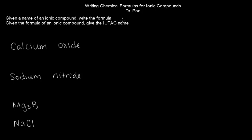Right now we're going to practice writing chemical formulas and naming ionic compounds. If you're given the name of an ionic compound, you should be able to write the formula. If you're given the formula, you should be able to give the name.